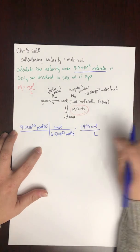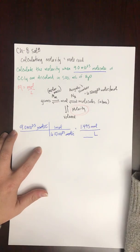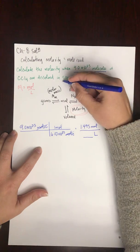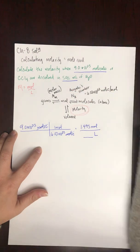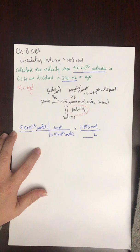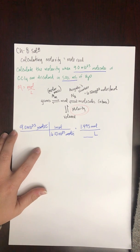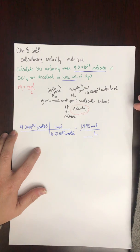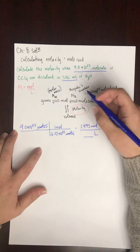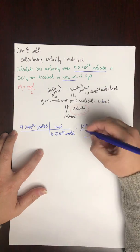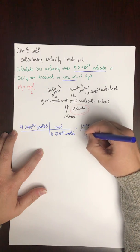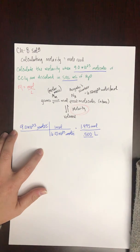Molarity is moles per liters, so I need the volume in liters. I'm given 500 milliliters, so I convert: there are 1000 milliliters in one liter, so 500 milliliters equals 0.500 liters.